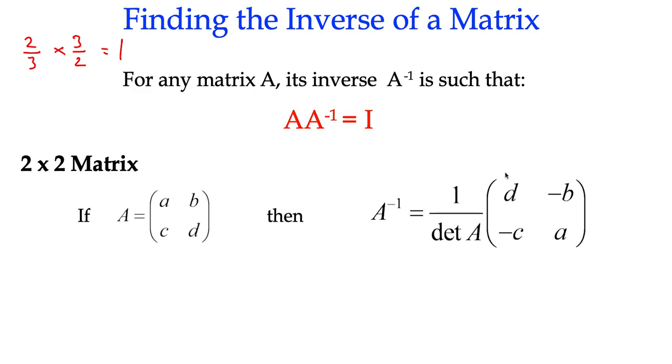If the determinant of A is not 0, we can go ahead and find it. So we're multiplying that fraction by a matrix, but if you look at it, it's different to the original matrix A. How is it different?